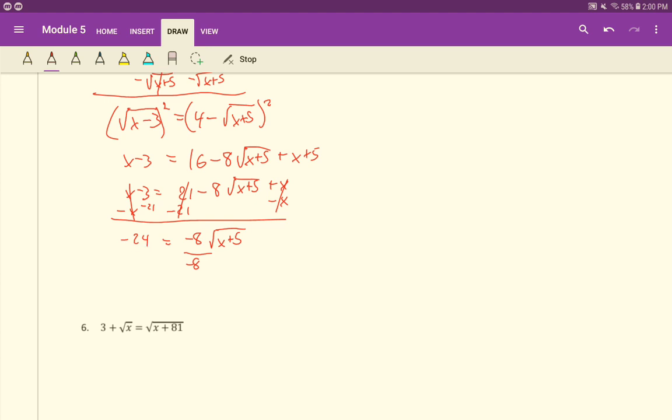We can divide both sides by negative 8. It's not necessary. You could just square at this current step that we're on right here. You could square both sides if you wanted to, but dividing will lower the numbers. And we do get a nice whole number here when we divide, so we get 3 and root x plus 5. If we square both sides, we'll get 9 equals x plus 5, and so x equals 4.